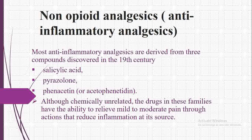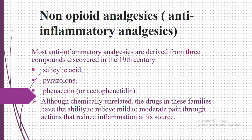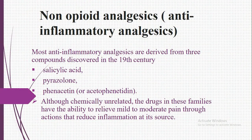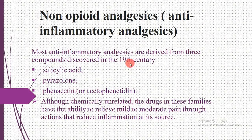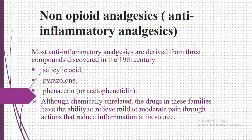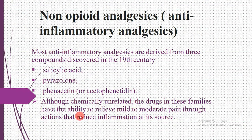Welcome to my new class. Today we will discuss non-opiate analgesics, or anti-inflammatory analgesics. Most anti-inflammatory analgesics are derived from three compounds discovered in the 19th century: the first is salicylic acid, the second is pyrazolones, and the third is phenacetins, also known as acetophenitidines. Although chemically unrelated, drugs in these families have the ability to reduce mild to moderate pain through actions that reduce inflammation at its source.